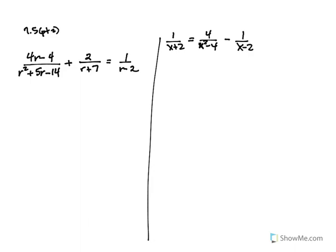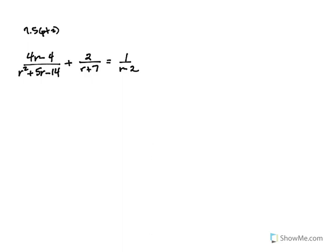We're going to solve this equation, but it has fractions in it. We have to clear the fractions first. In order to clear the fractions, we need the LCD. So we go to our rules — in order to find the LCD, you have to use all of the factors that are present in the denominators given to you.